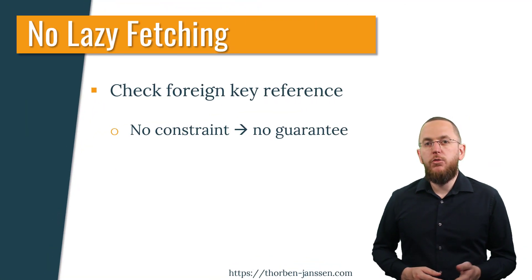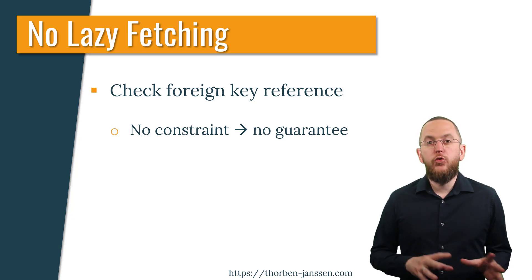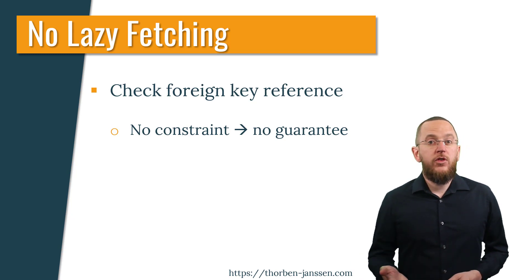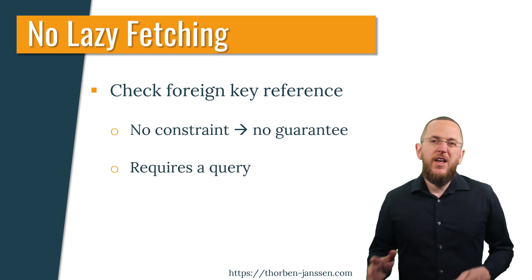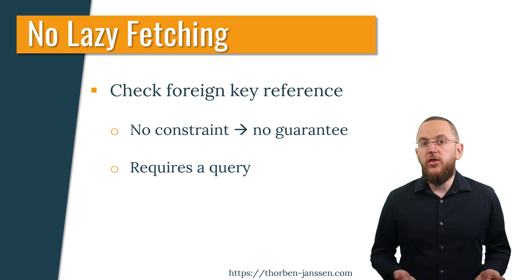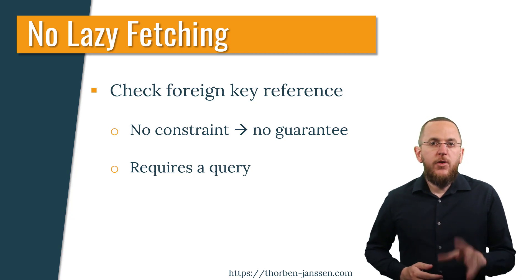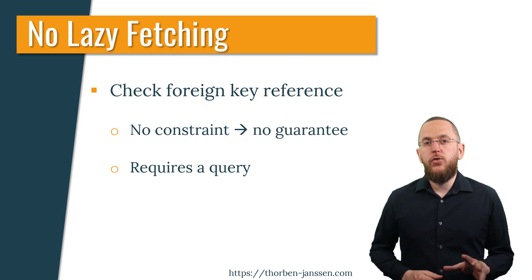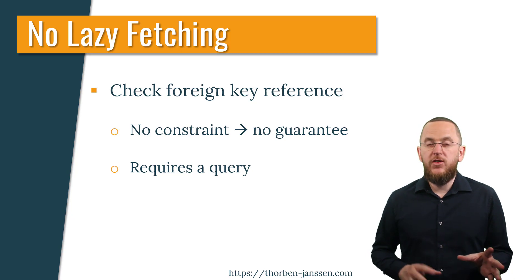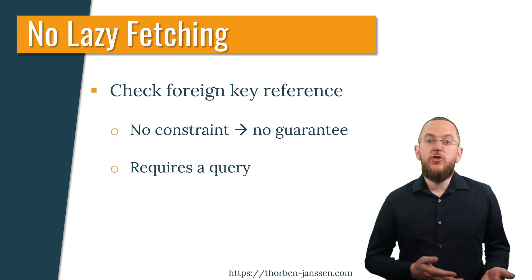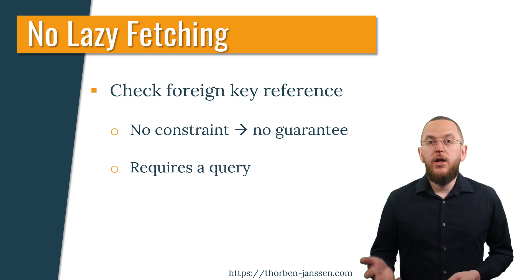If you annotate the association attribute with @NotFound, Hibernate can no longer trust the foreign key reference. Without a foreign key constraint, the reference might be broken. Hibernate therefore can't simply use the foreign key value to instantiate a proxy object — it first needs to check if the reference is valid, otherwise it would need to set the association attribute to null. Performing this additional query can create performance problems, but there's only a minimal performance difference between checking the foreign key reference and trying to fetch the associated entity. Due to that, the Hibernate team decided to use eager fetching for all associations annotated with @NotFound.